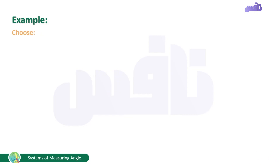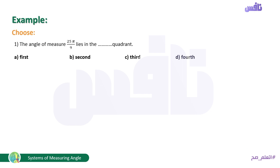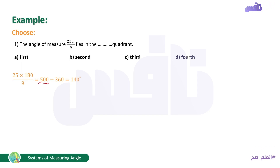Another example — choose: the angle of measure 25π/9 lies in which quadrant? Replace π with 180: (25 × 180)/9 = 500°. Since 500° > 360°, subtract 360°: 500° - 360° = 140°. Since 90 < 140° < 180, the angle lies in the second quadrant.